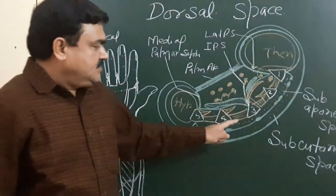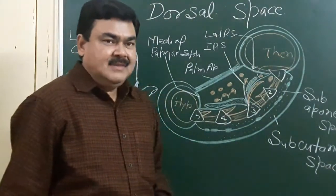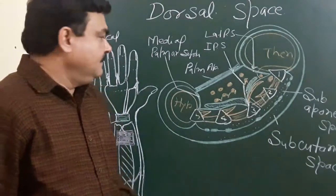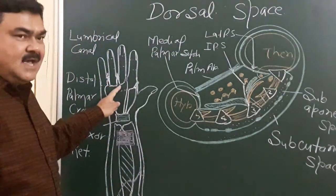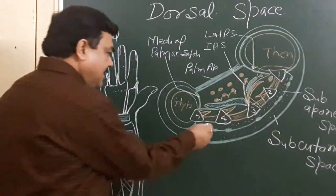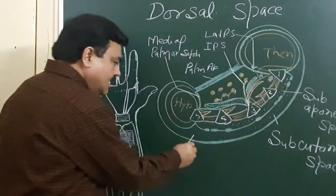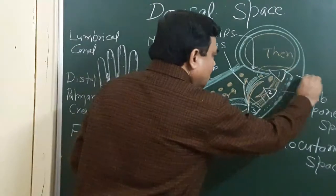If these spaces are infected, pus can be drained by making an incision over the affected space or on the lateral margin of the dorsum of the hand.